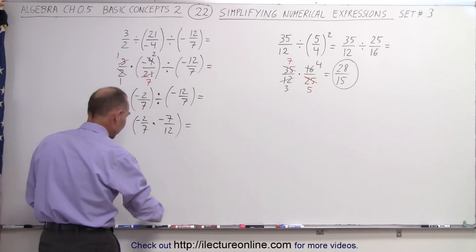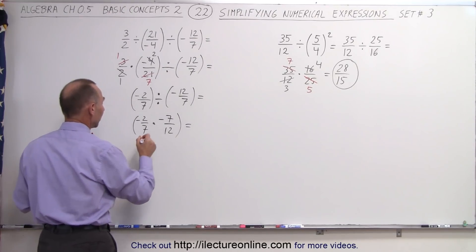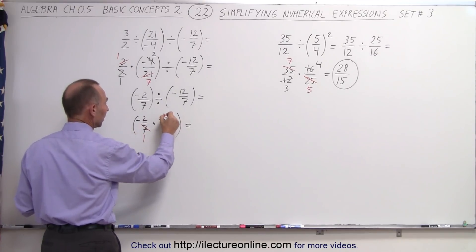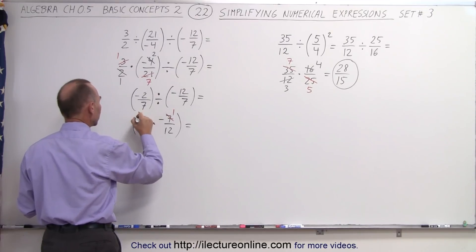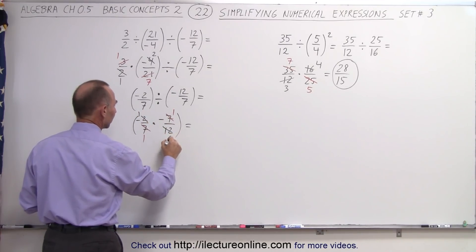But before we multiply, let's see if we can simplify some things. 7 divided by 7 is 1. And 2 and 12 are both divisible by 2, so 2 divided by 2 is 1, and 12 divided by 2 is 6.